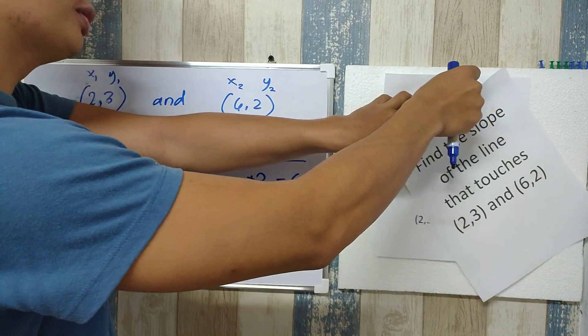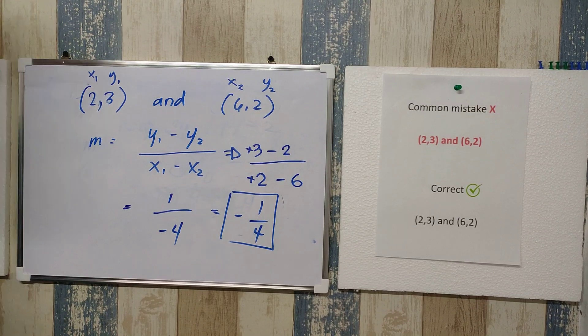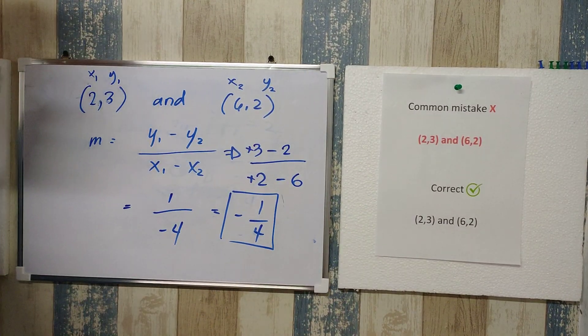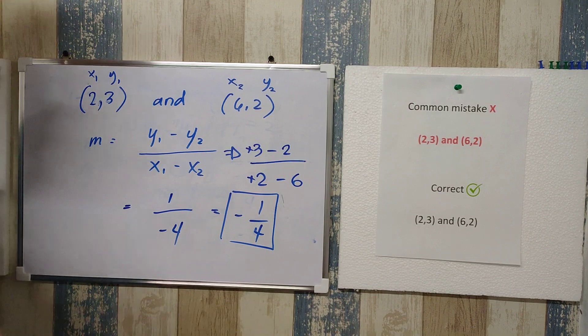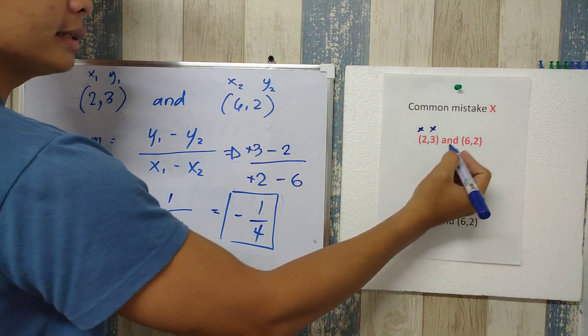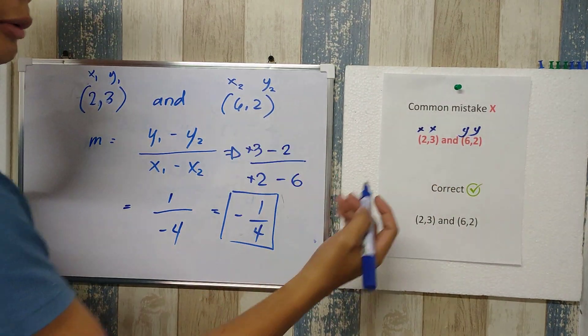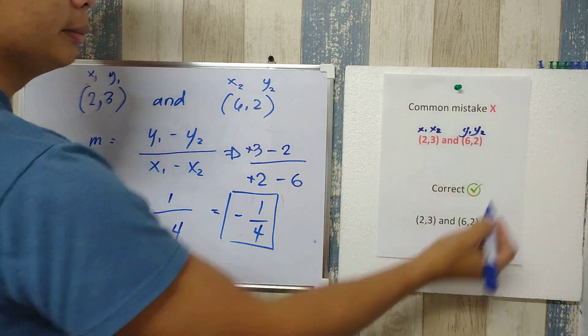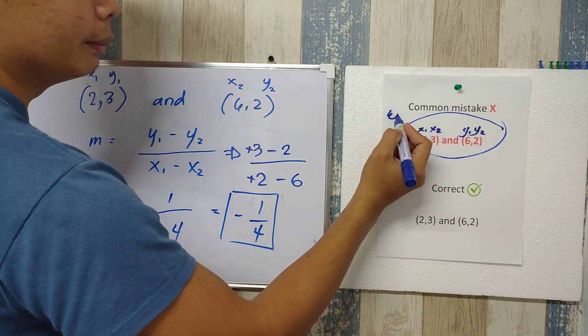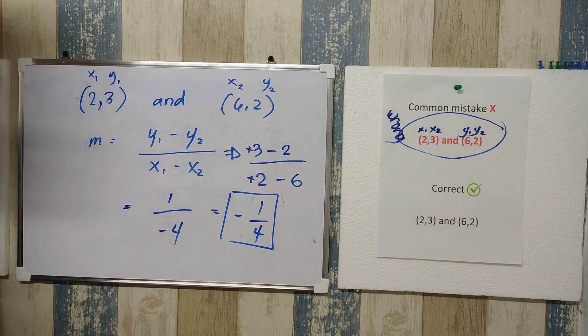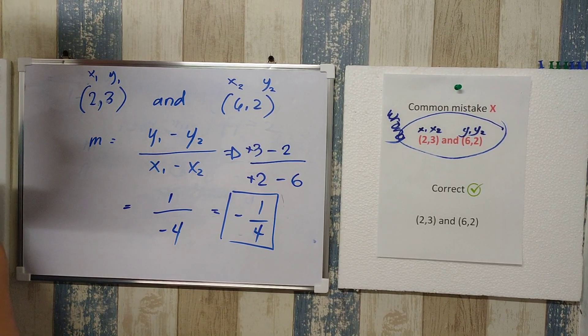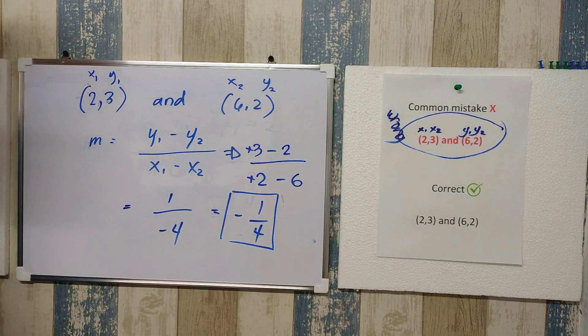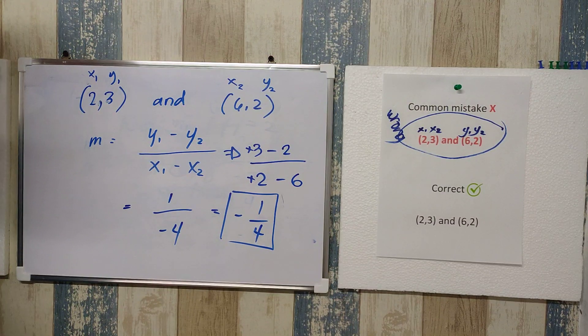Again, a common mistake that students make on this particular example is that they are assigning the coordinates incorrectly. What they do is group x, x, and then y, and y. So they make this the x sub 1, x sub 2, and then y sub 1, and then y sub 2. This is wrong. Although we discuss this repeatedly, there are some students who still commit these incorrect procedures. Although I see some are learning.